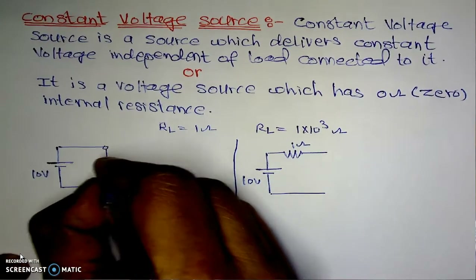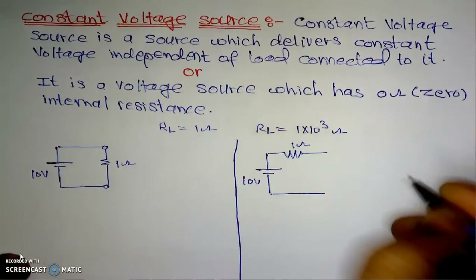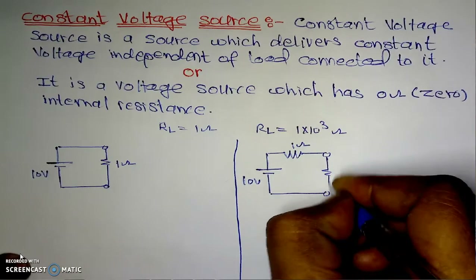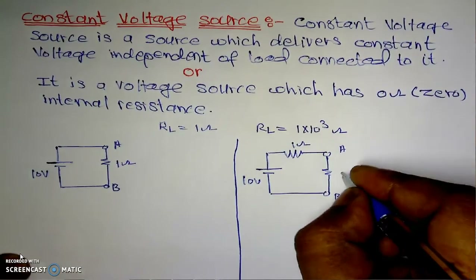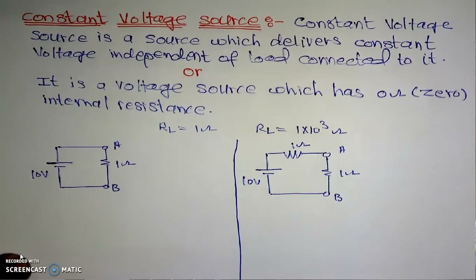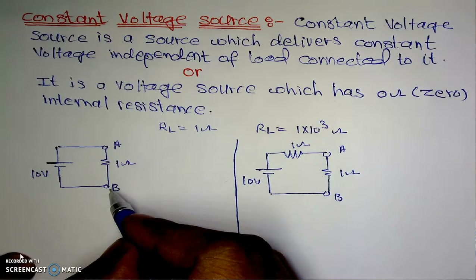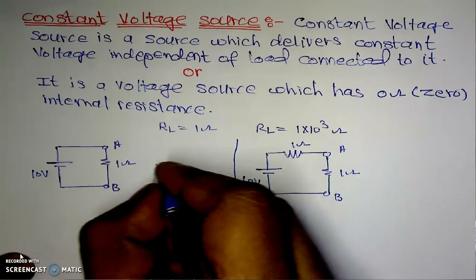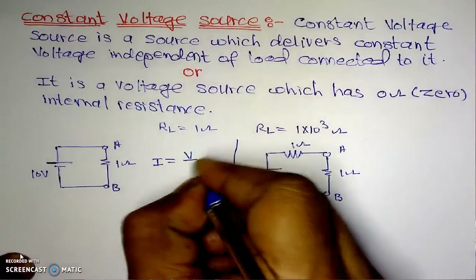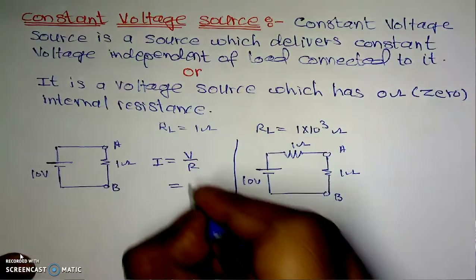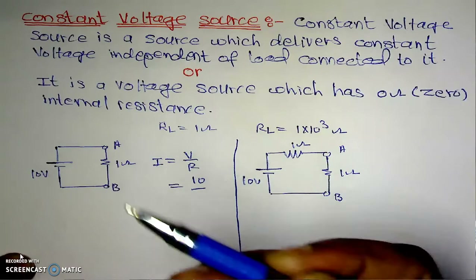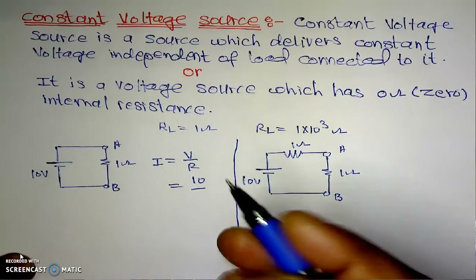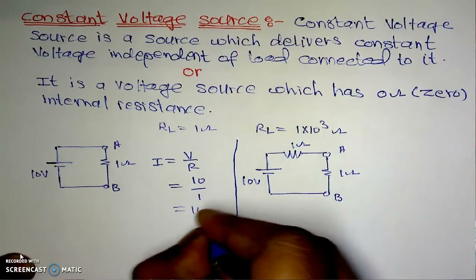We will test both circuits with a 1-ohm load. For the first case (zero internal resistance), the current I = V/R = 10/1 = 10 amperes. The terminal voltage VAB = I × R = 10 × 1 = 10 volts.